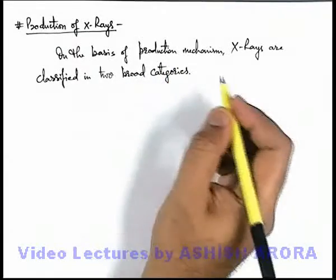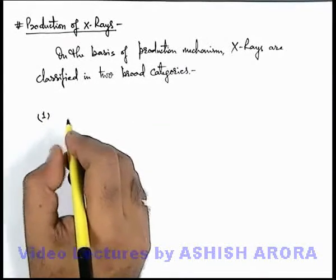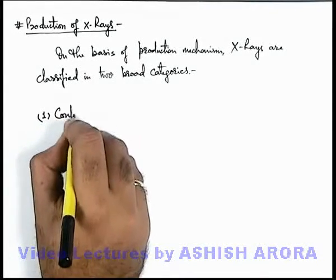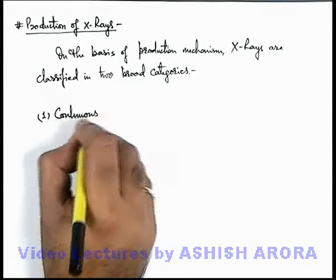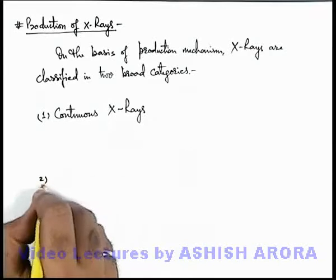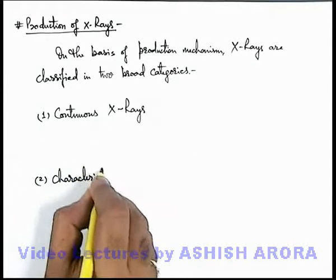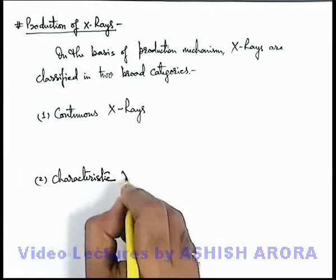In two broad categories. If we talk about X-rays, these are classified in two categories. The very first is continuous X-rays, and the second one is characteristic X-rays.